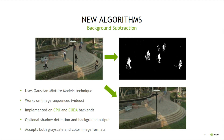Background subtraction is one of the user-requested algorithms. It processes an input video frame by frame and separates the moving regions from the static background, returning a foreground mask. VPI implements the Gaussian mixture model technique on both CPU and CUDA backends with an optional static background output and shadow detection.